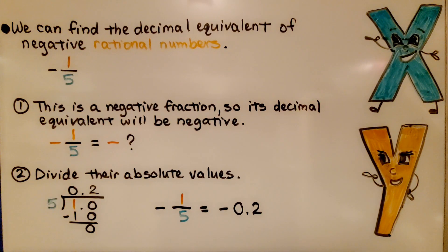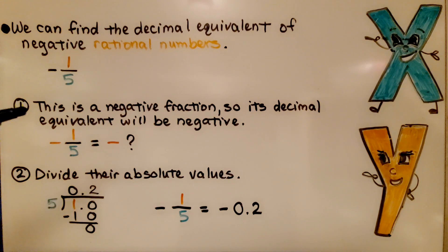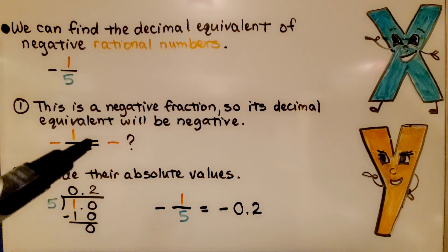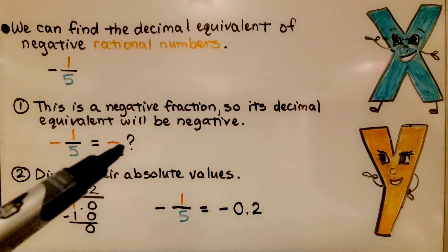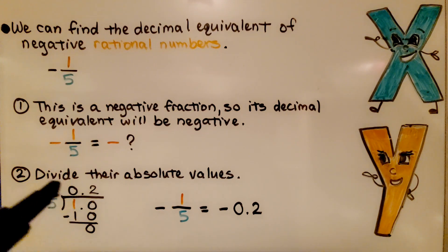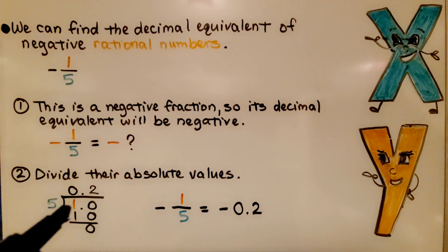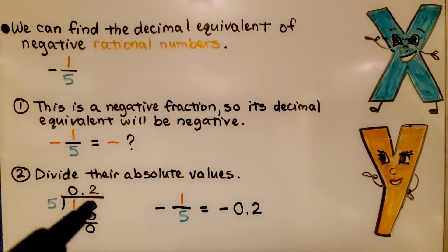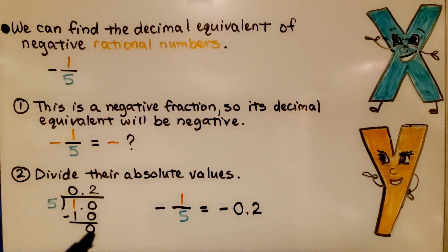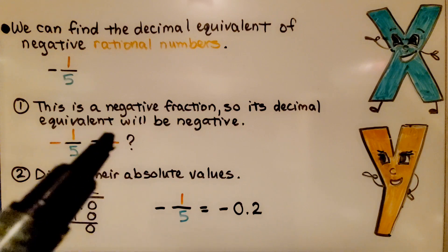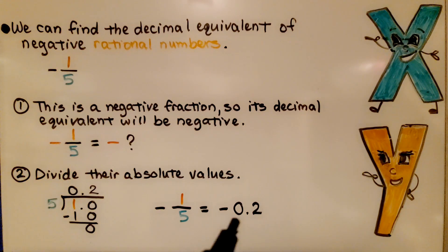We can find the decimal equivalent of negative rational numbers. Here we have negative one-fifth. Since it's a negative fraction, its decimal equivalent will be negative. We divide their absolute values: 1 divided by 5. 5 can't fit into 1, so we put a 0, add a decimal point, and think 5 fits into 10 two times; 5 times 2 is 10, giving a 0 remainder. It's a terminating decimal, and it's negative — so negative one-fifth equals negative 2 tenths.